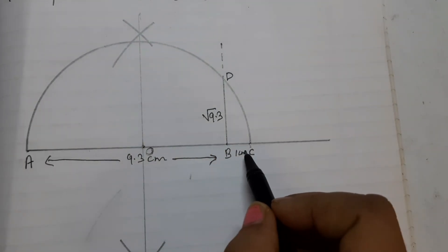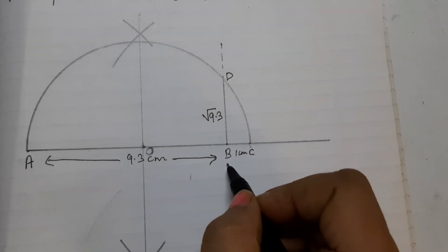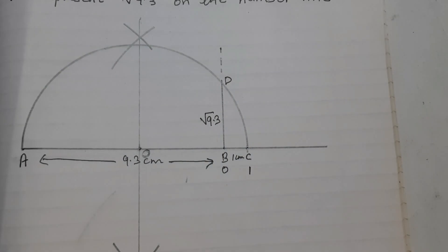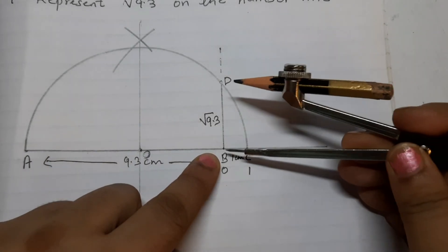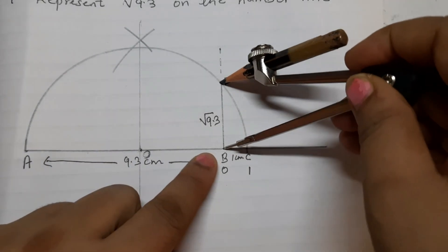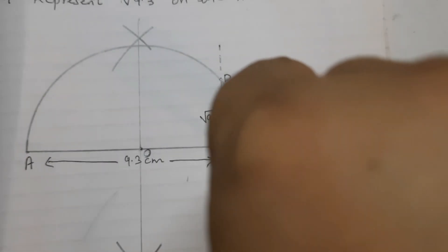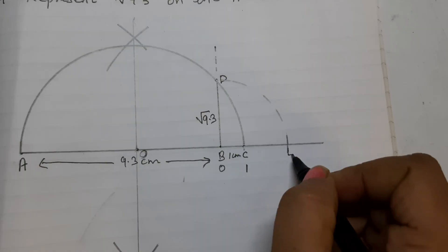Treat the line BC as the number line with B as 0, C as 1 and so on. Draw an arc with center B and radius BD on the number line. Let this point be E.